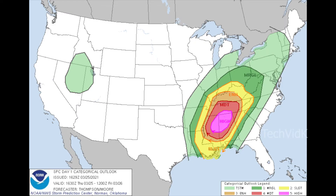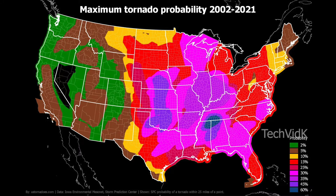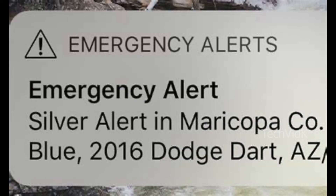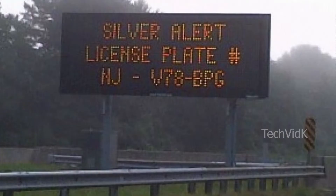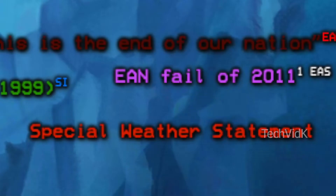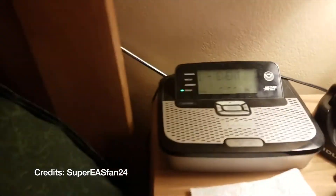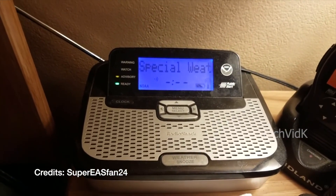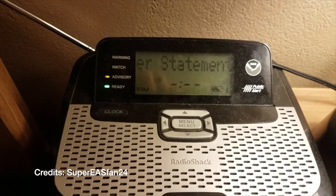SPC convective outlooks — refers to the graph used to predict the outlook of a severe weather emergency, generally shown as a map of the USA with different colored outlines covering the affected areas, with colors distinguishing the severity of the weather. Silver Alert — similar to an Amber Alert, but used to alert the public of a missing or endangered elderly person. It is generally used when a person with Alzheimer's or dementia goes missing.